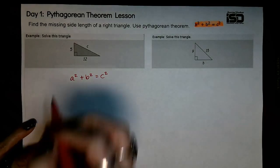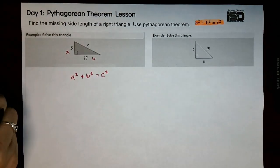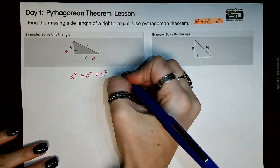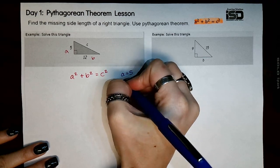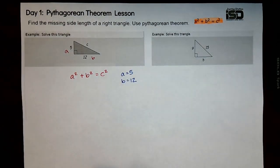Then we're going to identify our legs. So this is a and b, and these are the values that we know. Knowing that a equals 5 and b equals 12, remember, if you flip those around, that's okay, we'll get the same answer.